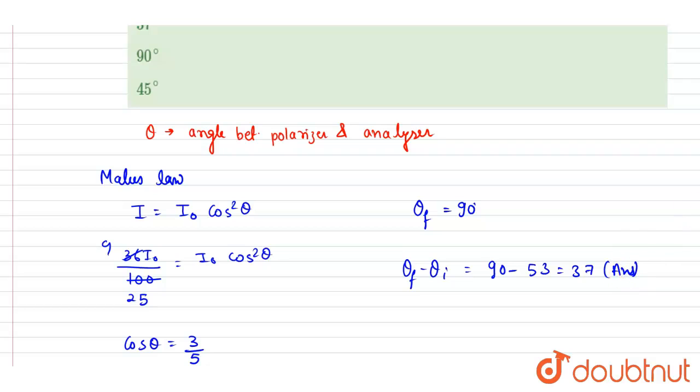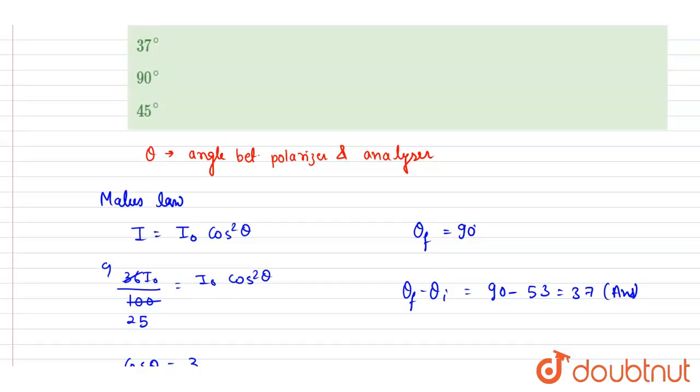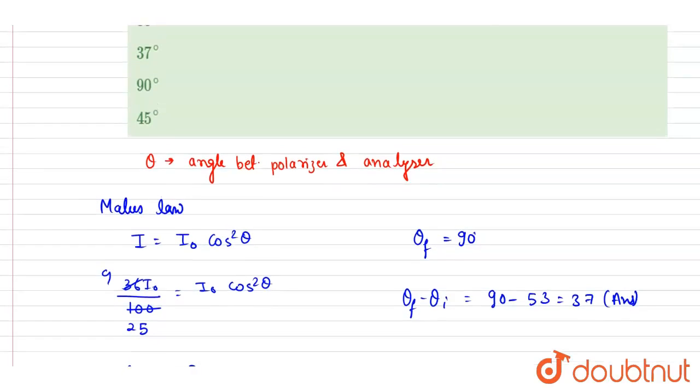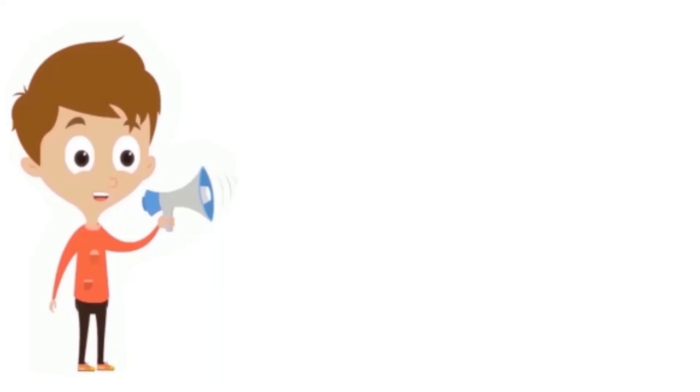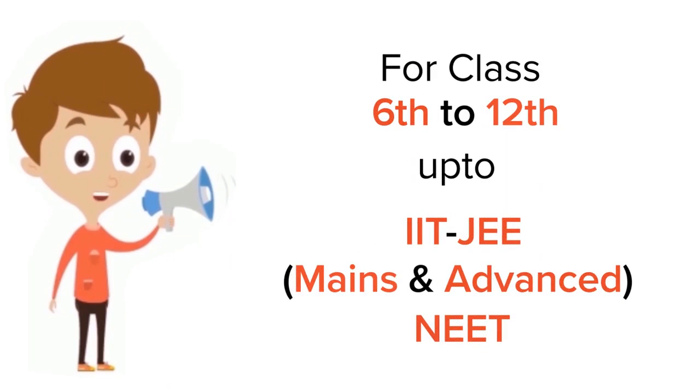By 37 degrees it should be rotated so that the final intensity from the analyzer is zero. Now you can check, option B is the correct one. Thank you.